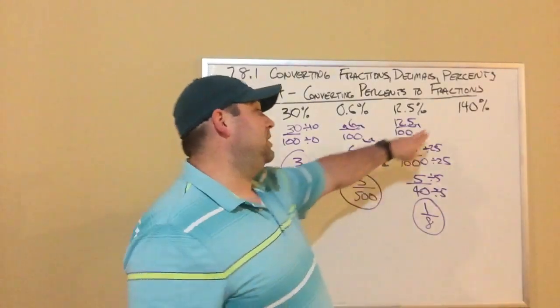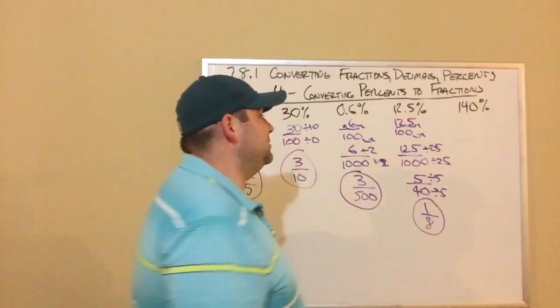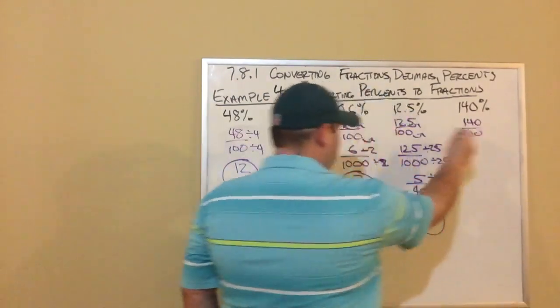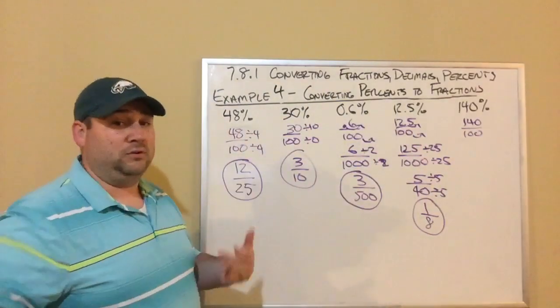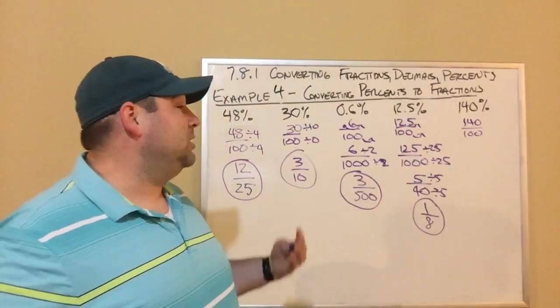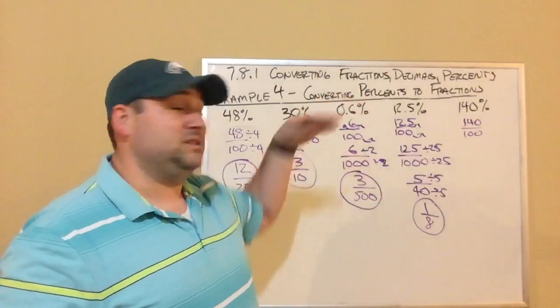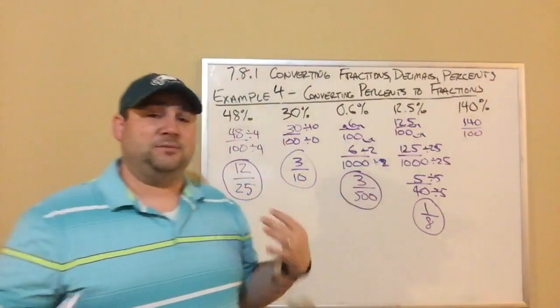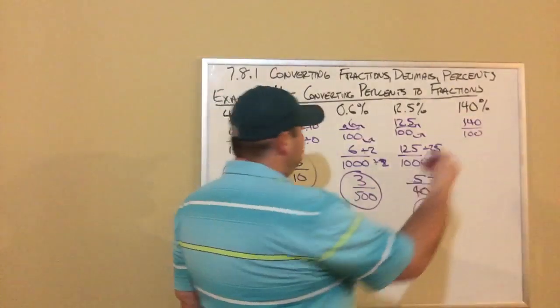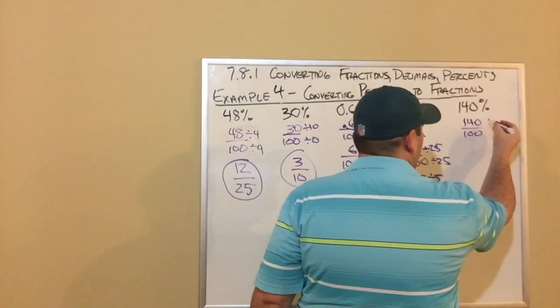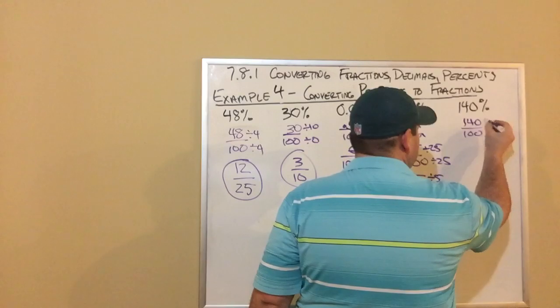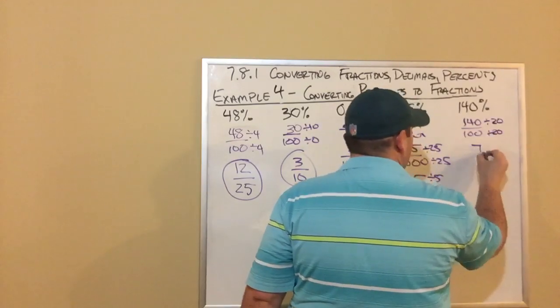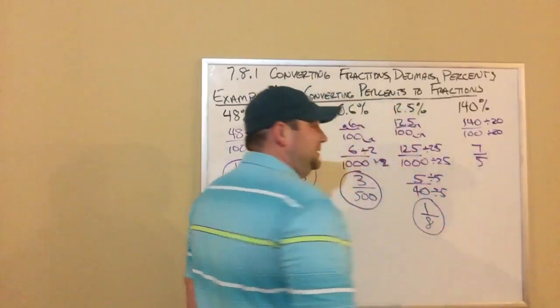So my last one: 140 percent. We do this one, we take the 140, we put it over 100. Same thing every single time - you look at every single time, we put it over 100. And then we go from there. This one, we can see the numerator is larger than the denominator, but that makes sense because it was over 100, the percentage we were dealing with. So again, we're just going to simplify this. I look at these, I know 20 goes into both. That's going to be 7 over 5.